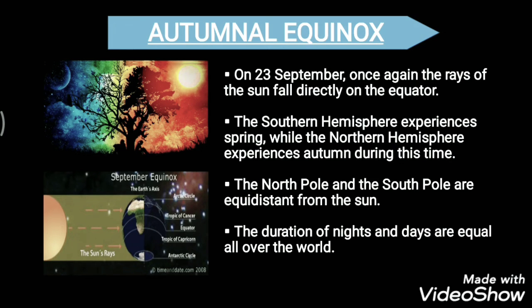These are the two specific moments when the Sun is exactly above the equator: 21st of March and 23rd of September. The dates can sometimes differ — the spring equinox may fall on the 20th or 22nd of March, and the autumnal equinox may fall on the 22nd or 23rd of September.